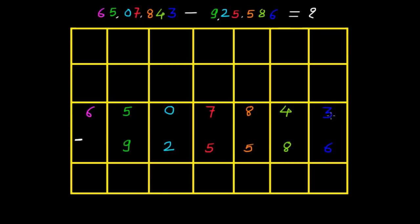In the unit place we have to subtract 3 minus 6. Here 3 is the smaller number and 6 is the bigger number, so it is not possible. That's why we have to borrow 1 from the 10th place, making it 13. So borrowing 1 is nothing but borrowing 10, so 10 plus 3 is 13. Now 13 minus 6 is 7, so let me write 7 in the answer.